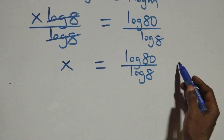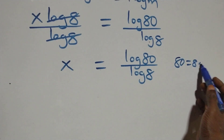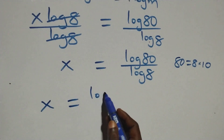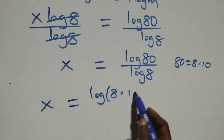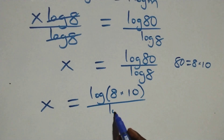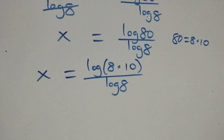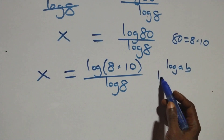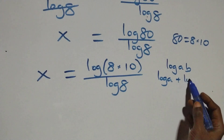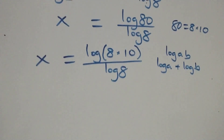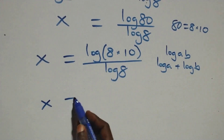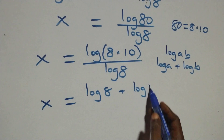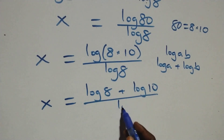Next, we express 80 as 8 times 10. So x equals log(8 times 10) over log 8. Using the product rule of logarithms — log(A times B) equals log A plus log B — this becomes x equals (log 8 plus log 10) over log 8.